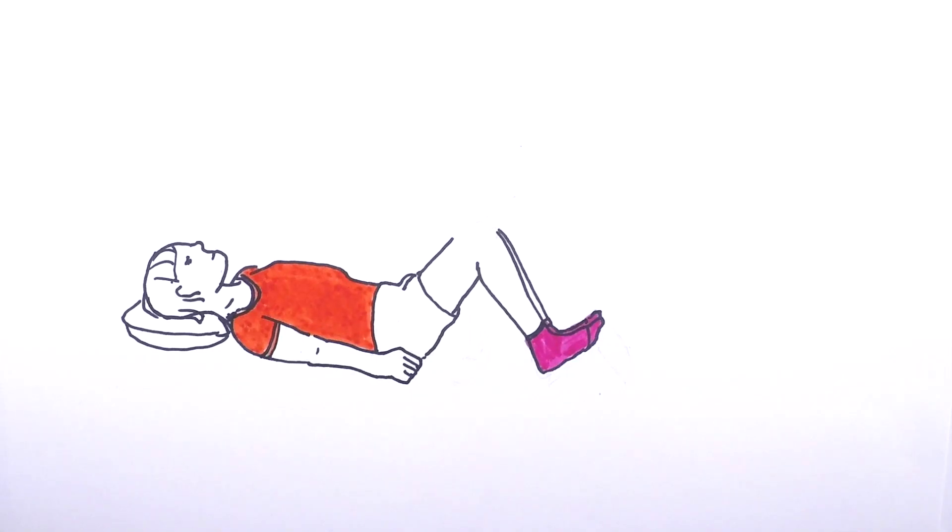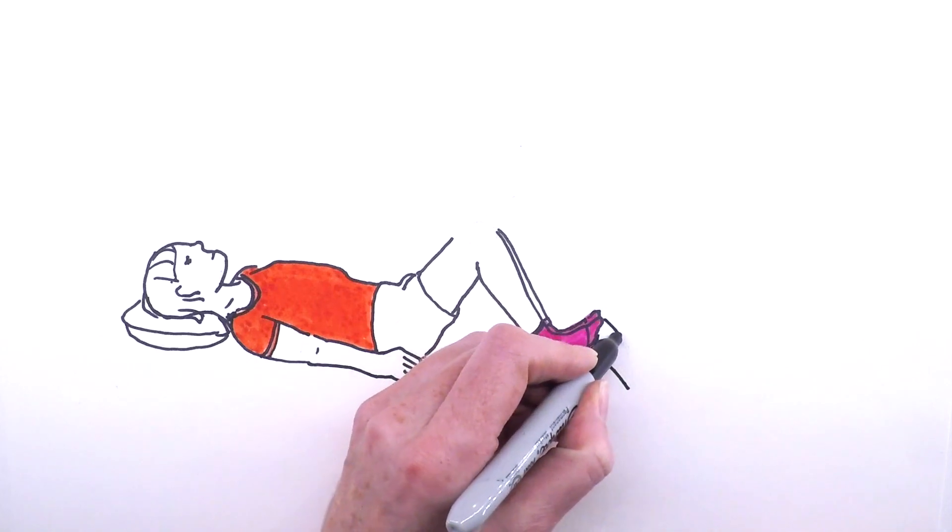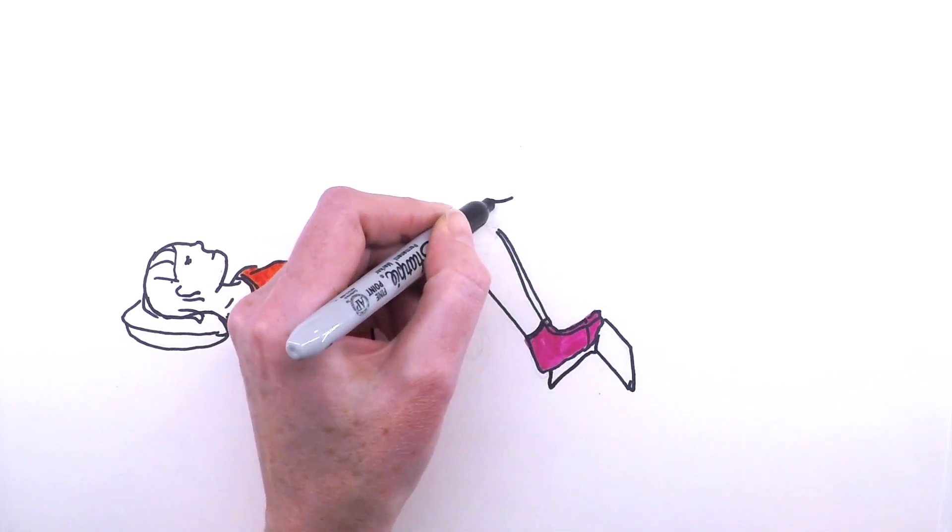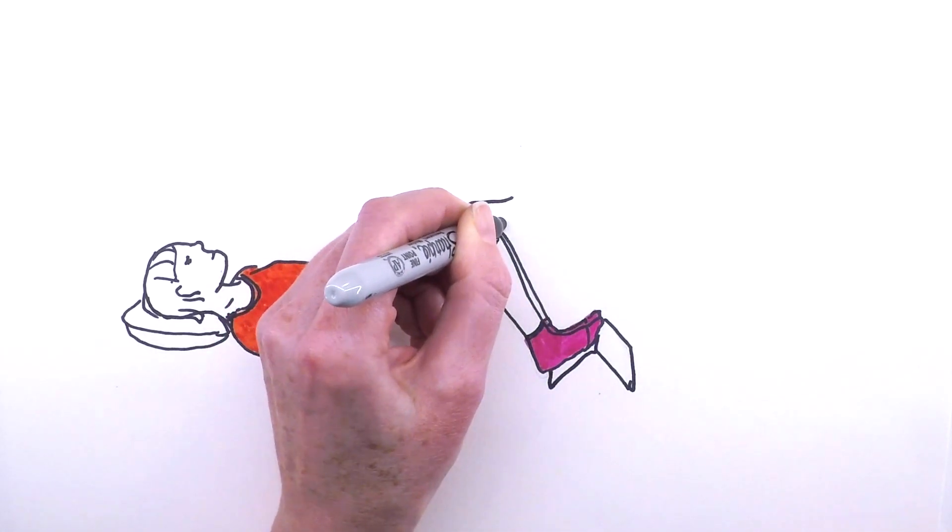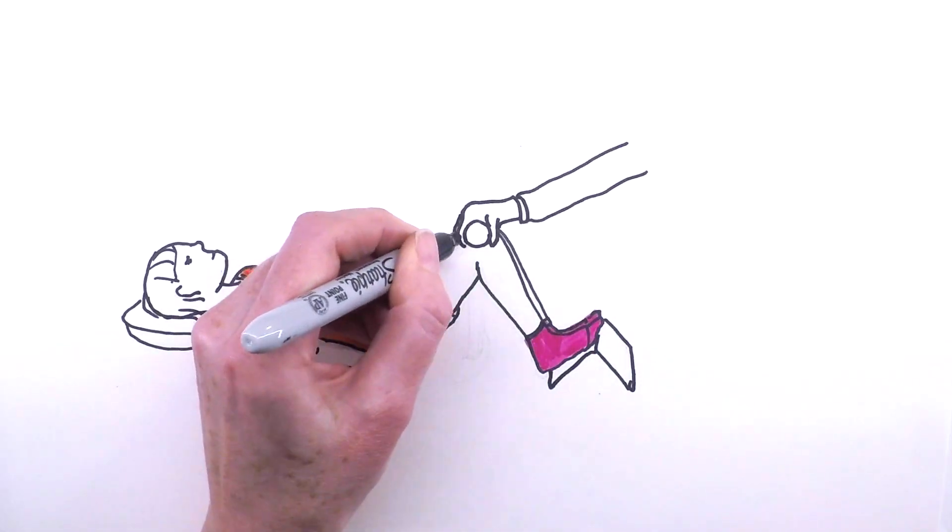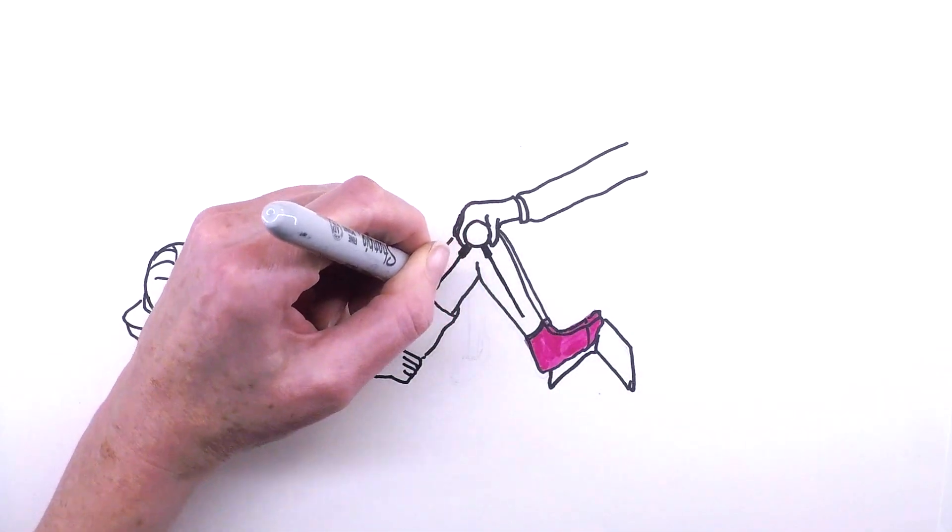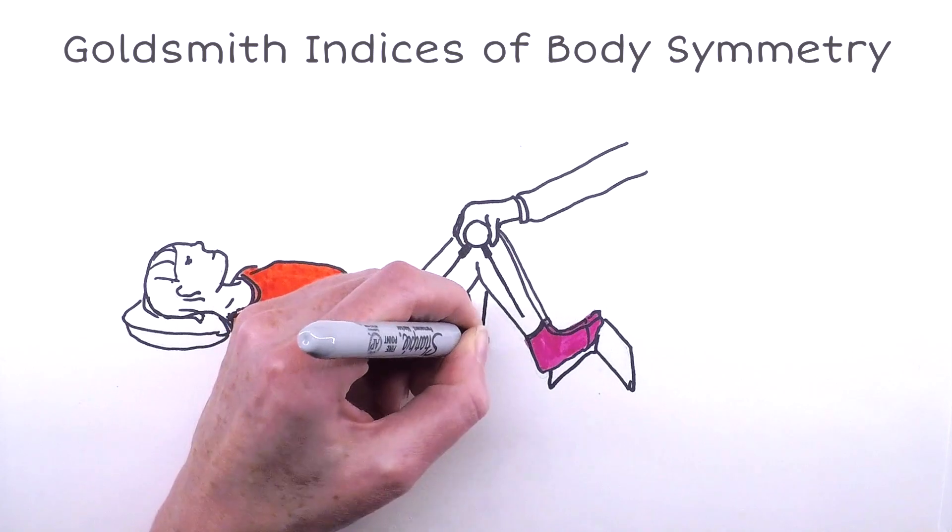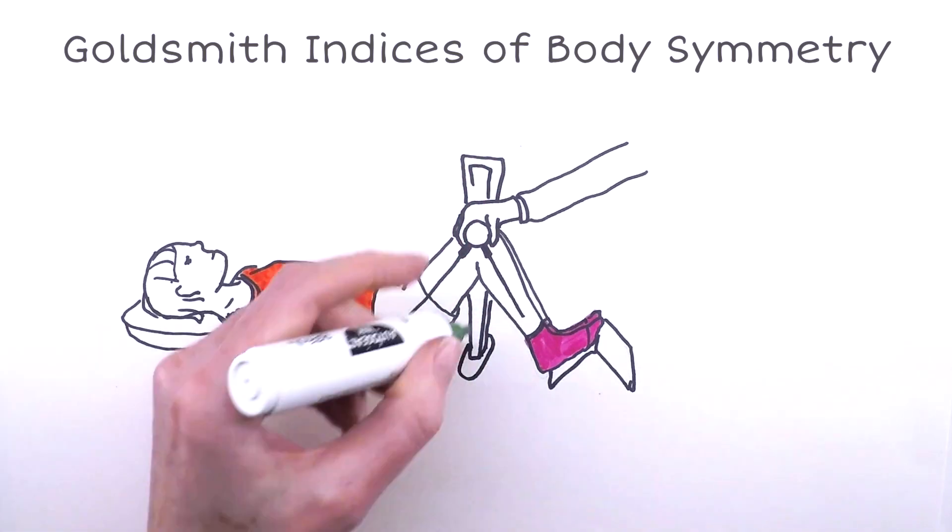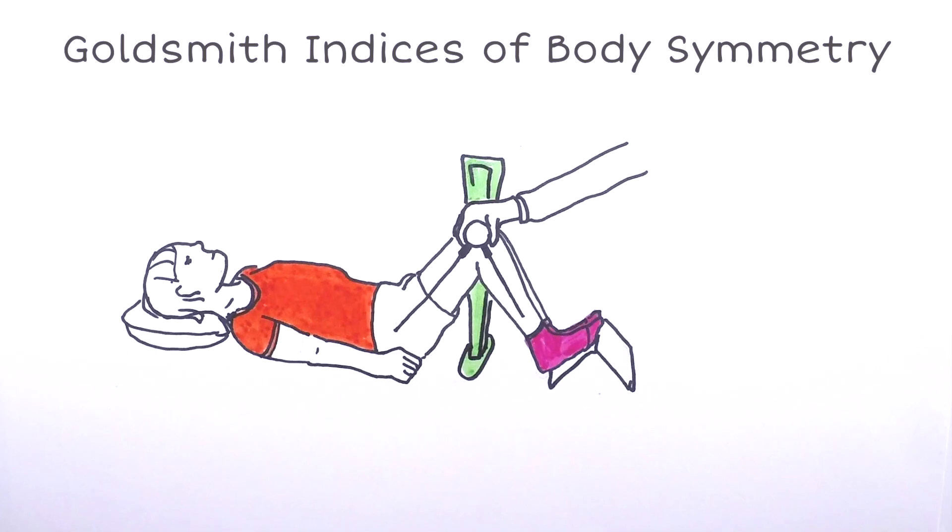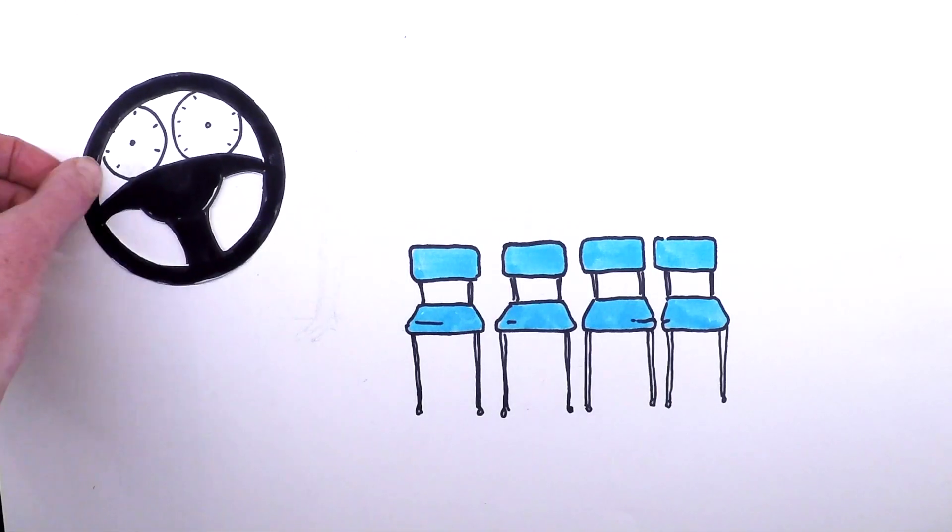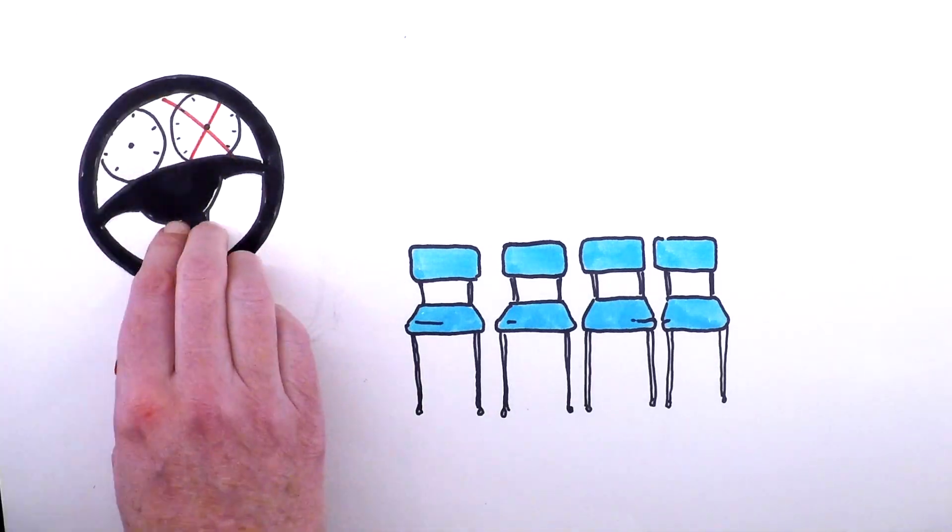But numbers are important. Standardized measurements show when something's working well and when something needs to change. The Goldsmith Indices of Body Symmetry is the only validated objective outcome for body shape changes. You wouldn't drive without a speedometer.